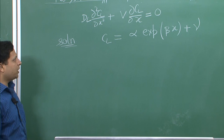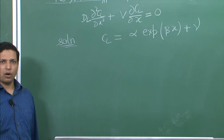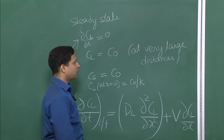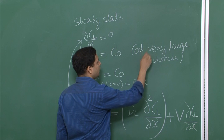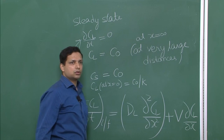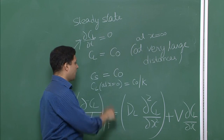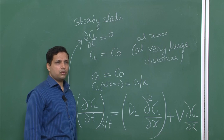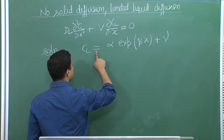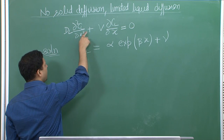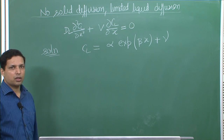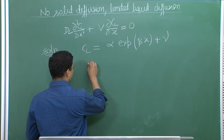We can find those values by applying the boundary conditions. We know that C_L equals C_naught at very large distances, meaning at x equal to infinity, and at x equal to zero, C_L equals C_naught over k. Let us differentiate this expression with respect to x, then take the second derivative, and substitute back into the equation to find the constants.